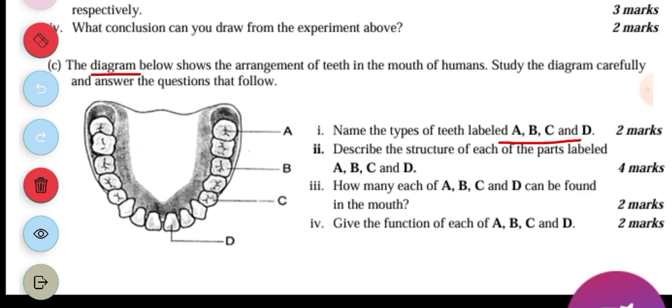So we are told to name A, B, C and D. So this A, B, C and D. So A is the molars or molar, B is the premolar, C is the canine.